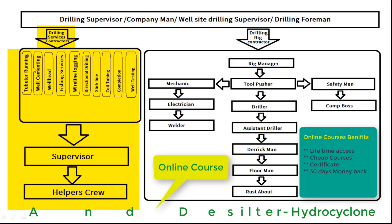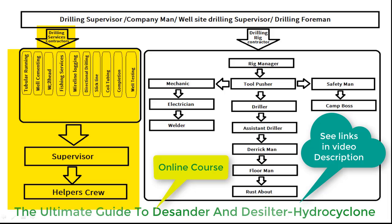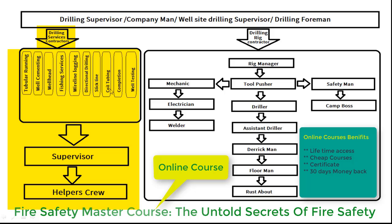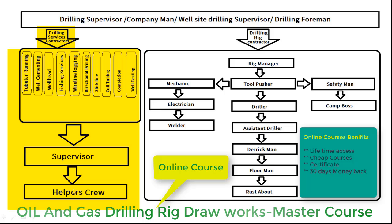On the drilling services contractor side, there may be different companies or contractors who provide different services, like tubing running services, well cementing services, well head installation services, fishing services contractor, wire line logging contractor, directional drilling contractor, slick line, coil tubing, completion and well testing contractor. There will be different companies providing these different services to the operator for drilling and completing the well. The hierarchy for drilling services contractors is very simple — the top most rank will be supervisor, and under supervisor there will be a couple of helpers.